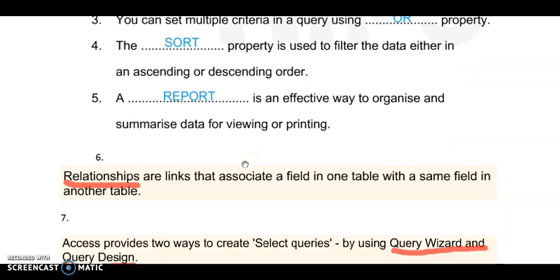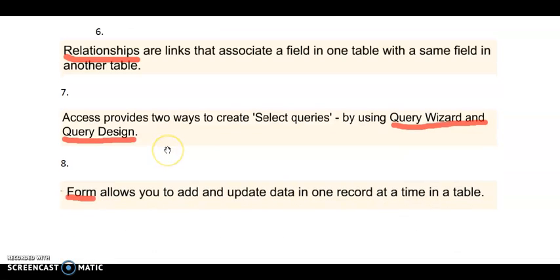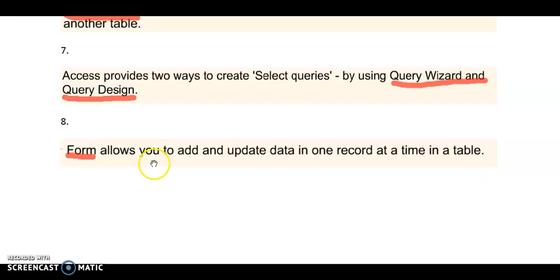Now these five fillers are from your book. I will give you some extra fillers. Number six: blank are links that associate a field in one table with the same field in another table. That is Relationship. Number seven: Access provides two ways to create select queries by using blank and blank. It is Query Wizard and second is Query Design. Number eight: blank allows us to add and update data in one record at a time in a table. It is Form.